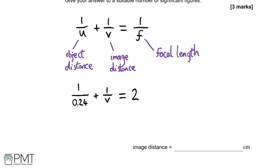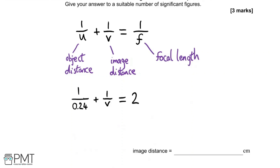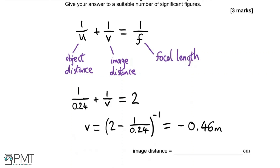We have 0.24 meters as the object distance — notice how I've converted this into meters rather than centimeters. We have 1 over v because we don't know the image distance, and 1 divided by a half gives us 2, since the power of the lens is the reciprocal of the focal length. Rearranging this equation to make v the subject gives minus 0.46 meters, or minus 46 cm. I've rounded to two significant figures because that's the number given in the question.